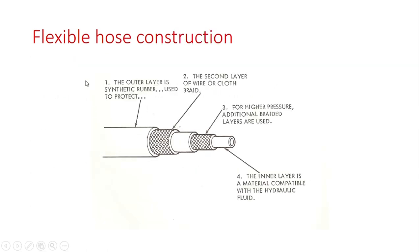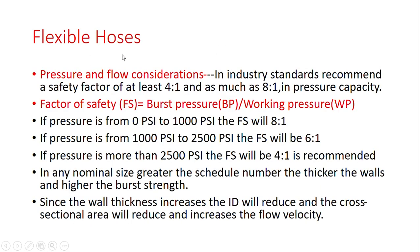The outer layer of hose is synthetic rubber, used for protection. The second layer is wire and cloth braided reinforcement. For high pressure, additional braided layers are used. The inner layer must be made of material compatible with the hydraulic fluid being used.